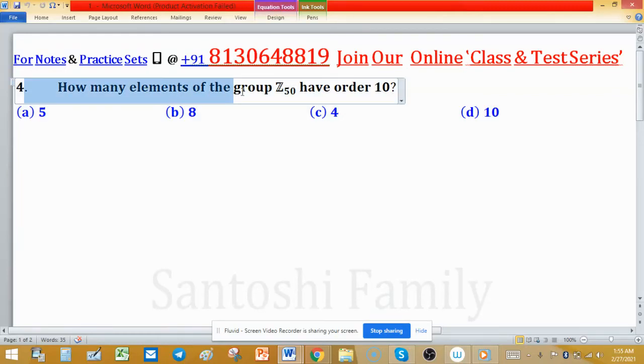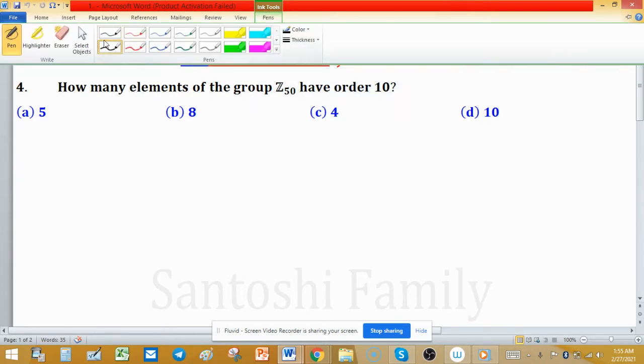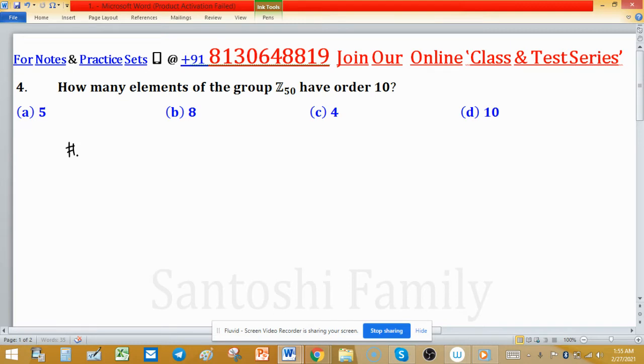How many elements of group Z50 have order 10? This means the number of elements, which we normally represent by the hash symbol. This is for the number of elements of order 10 in Z50. This problem can be solved by formula easily.